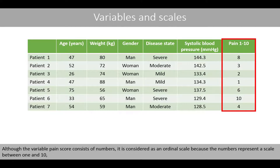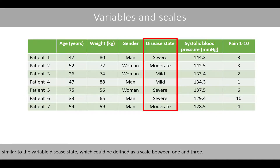Although the variable pain score consists of numbers, it is considered an ordinal scale because the numbers represent a scale between 1 and 10, similar to the variable disease state, which could be defined as a scale between 1 and 3.